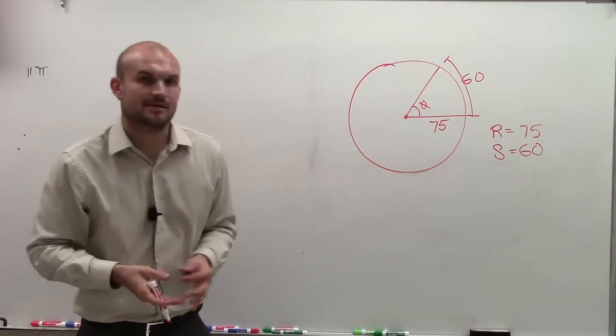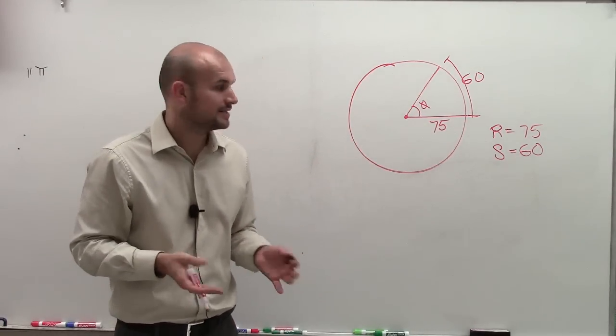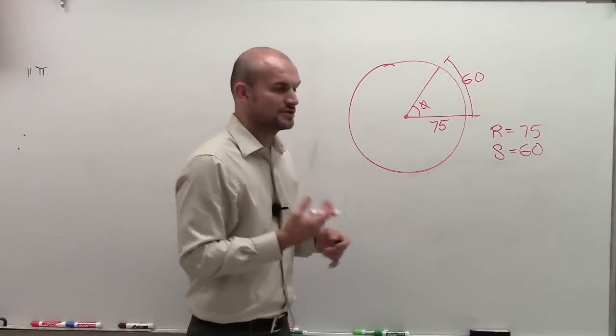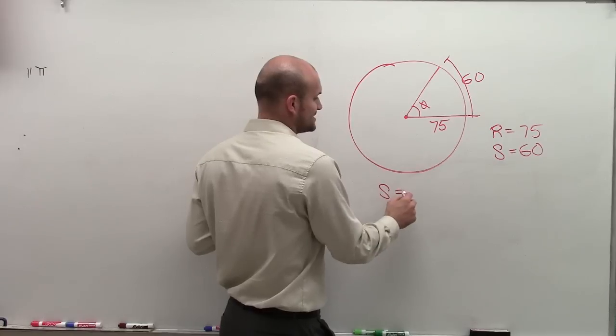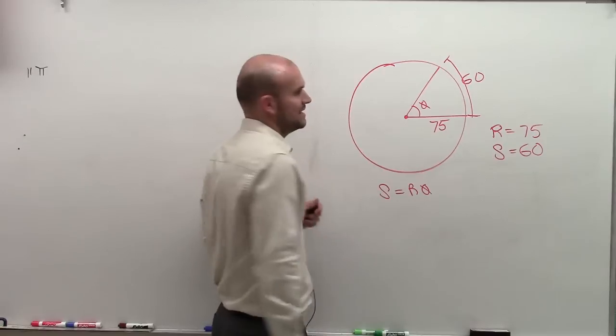Now, what I'm trying to do is find the central angle. So there's a formula that we're going to use. And what it says is the arc length is equal to the radius times theta.